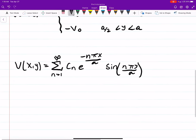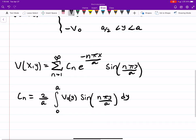So if this comes across like I'm just pulling this out of nowhere, it's coming from the example. So our constant c_n is 2 over a, the integral from 0 to a, V₀ as a function of y, sine nπy over a dy. Okay, so that was from the example problem itself.